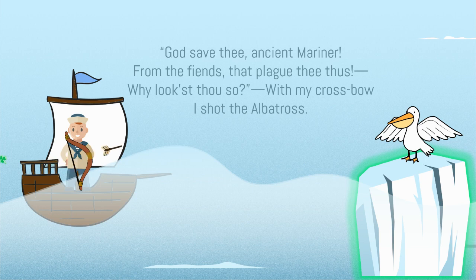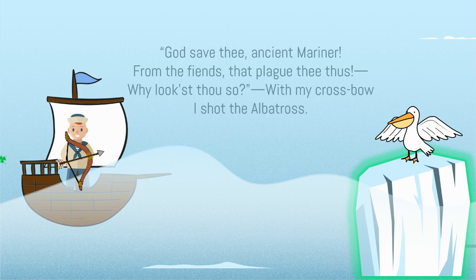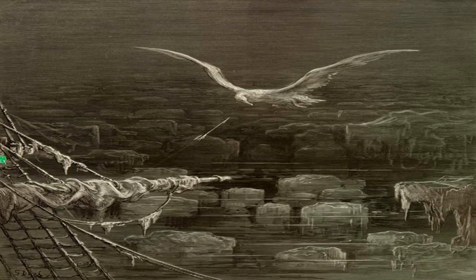'God save the ancient mariner from the fiends that plagued him thus!' — the wedding guest is talking, shocked as the mariner looks suddenly pale. 'Why lookest thou so?' — why do you seem so unwell? The ancient mariner replies: 'With my crossbow I shot the albatross.' We can see Doré's painting of this moment. And it is exactly at this part that the first section of the poem ends. The poem is written in seven parts, so I hope you follow my other videos. Thank you very much for listening.